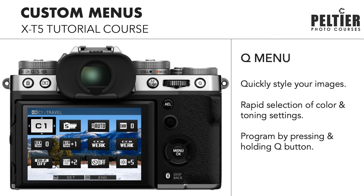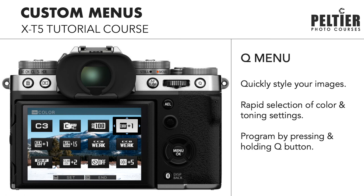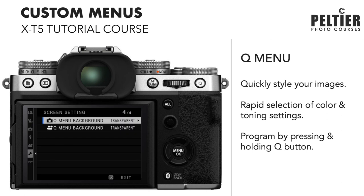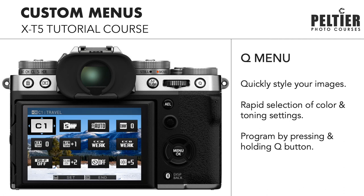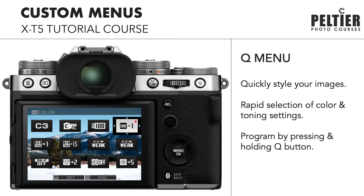You can also choose either a black background or a transparent background in the Q menu. I like the transparent background because I can see what my changes are doing as I make them — to preview what's happening. If you find that distracting, you can select the black background. To change the background, go into the screen setting menu and then Q menu background. To use the Q menu in shooting mode, press the Q button, highlight the setting you want to adjust, use the command dial to adjust it, then press back when complete.